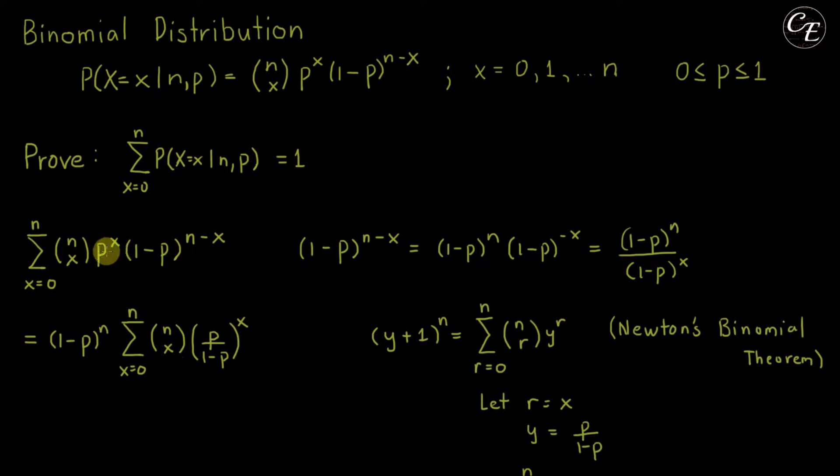Then this p raised to x and this 1 minus p raised to x can be combined together into p over 1 minus p raised to x.